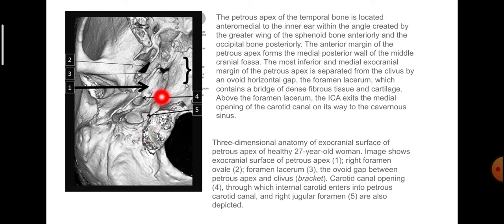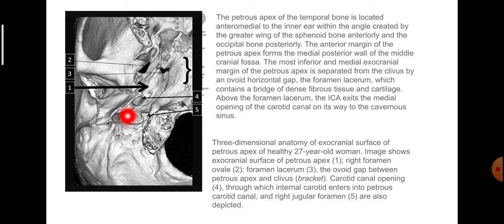The ovoid gap between the petrous apex and the clivus is the foramen lacerum. Number four is the carotid canal opening through which the internal carotid enters into the petrous carotid canal, and number five is the jugular foramen. On the exocranial surface: the foramen ovale, the foramen lacerum, the carotid canal opening, and the right jugular foramen.